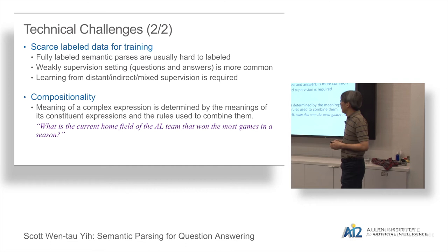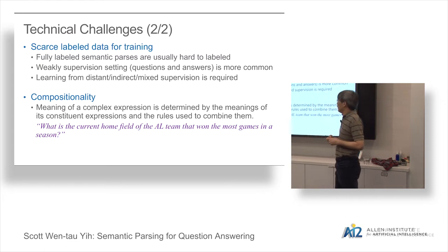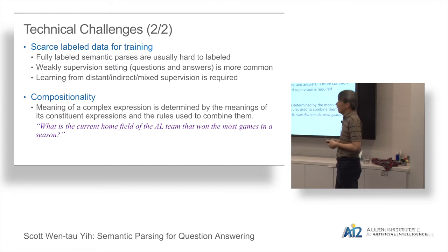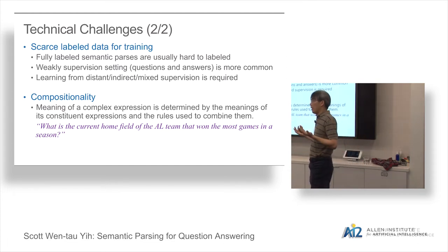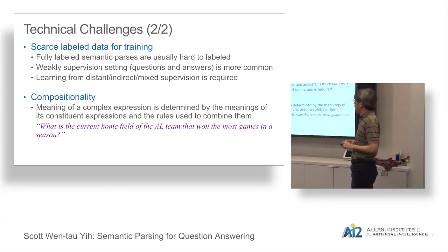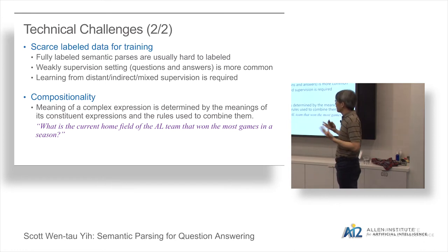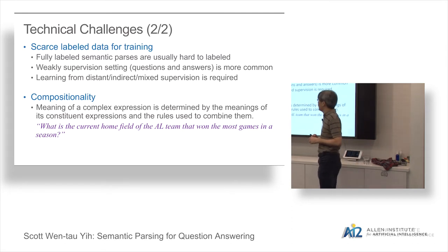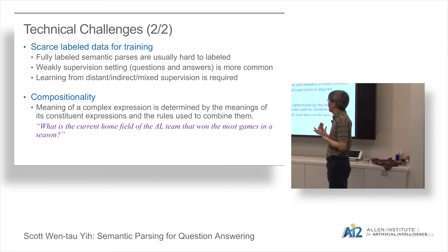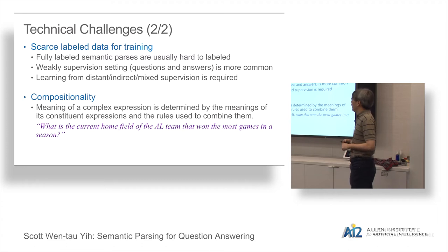The third challenge is that even nowadays we still have limited labeled data for training semantic parsers. It's usually hard to have a fully labeled semantic parse — creating a parallel corpus using a machine translation paradigm is not trivial. Most people try the weak supervision setting, where you only get pairs of questions and answers and then try to infer the parse. This introduces new learning challenges requiring frameworks like learning from distant supervision, indirect supervision, or mixed supervision.